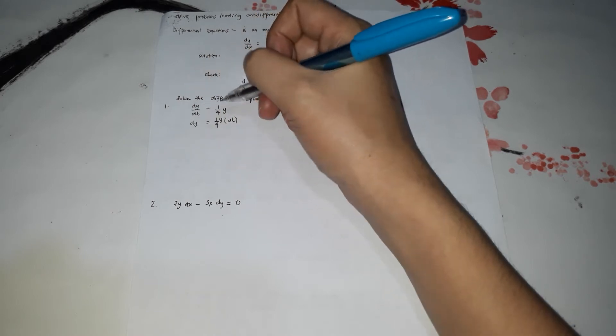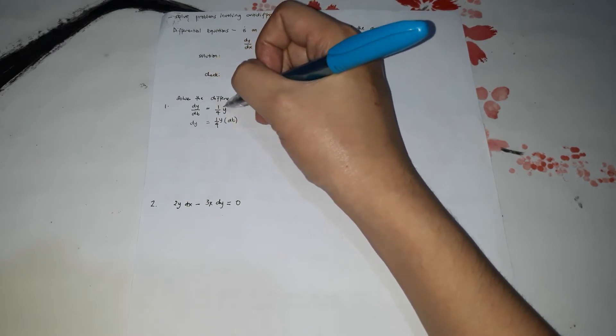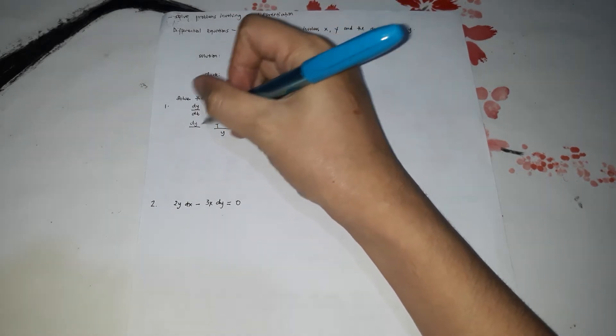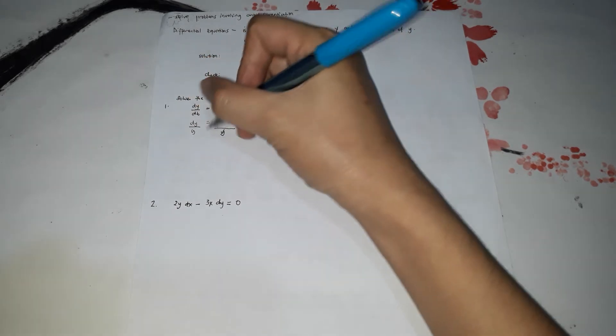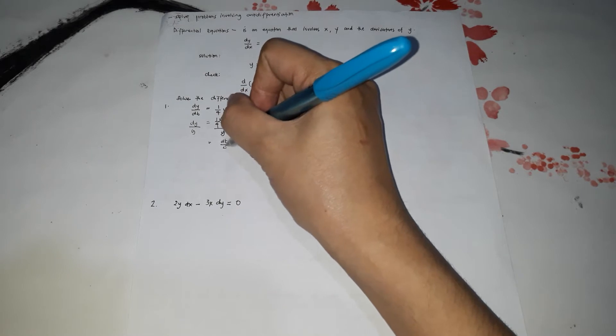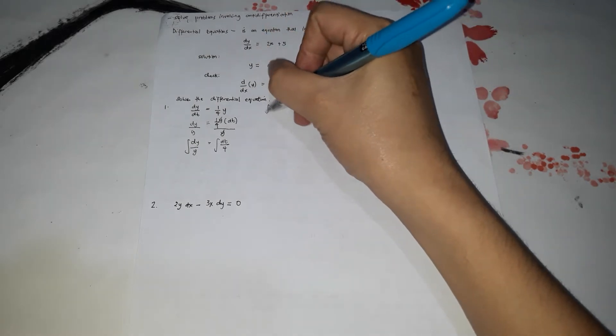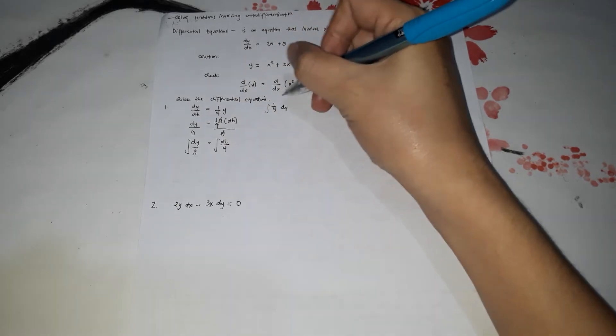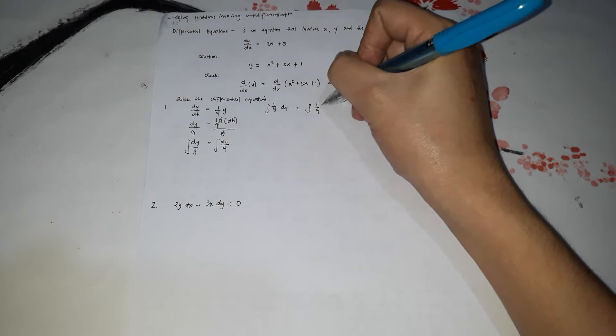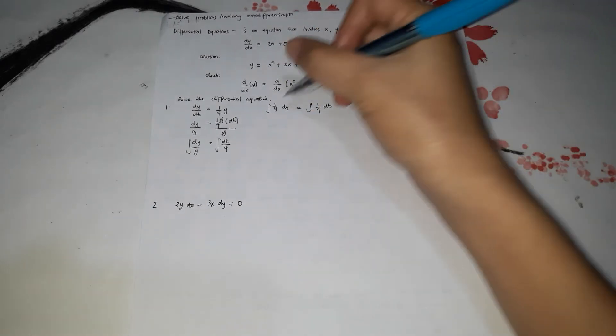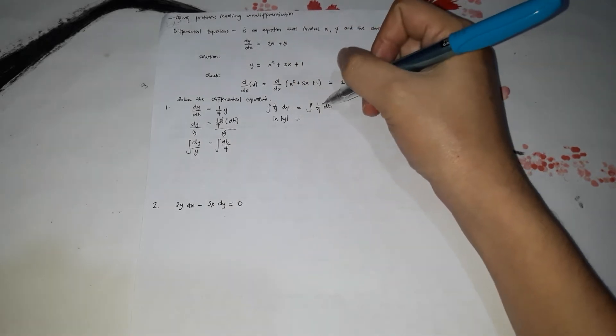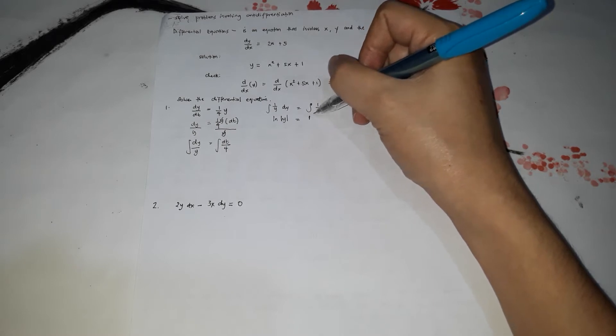Since y is next to 1/4, dividing both sides by y cancels it. So the result is dy over y on the left, and 1/4 dt on the right. After separating, we get the integral. The integral of 1 over y dy is ln of absolute value of y, and the integral of 1/4 dt is 1/4 t.